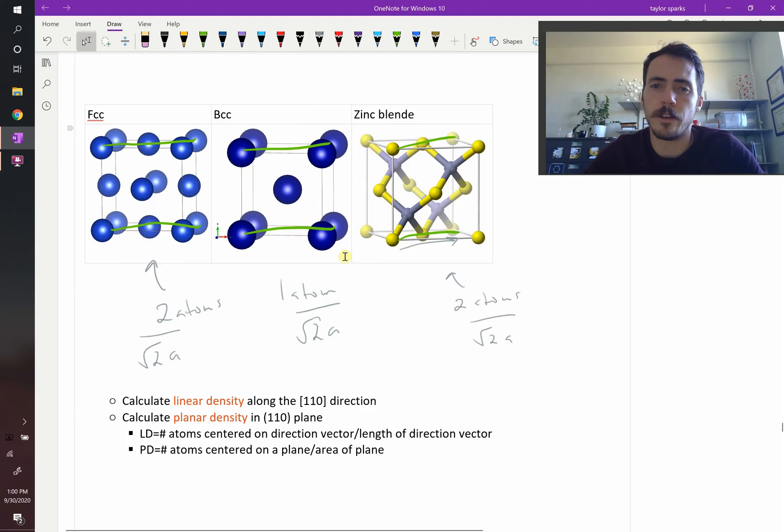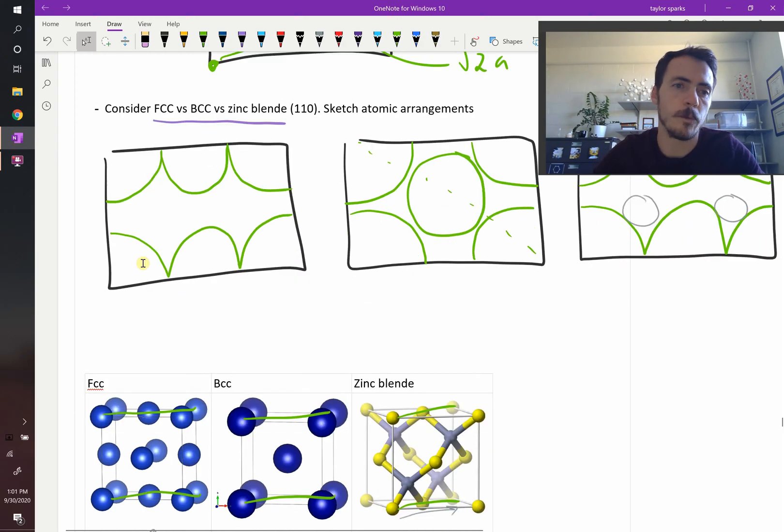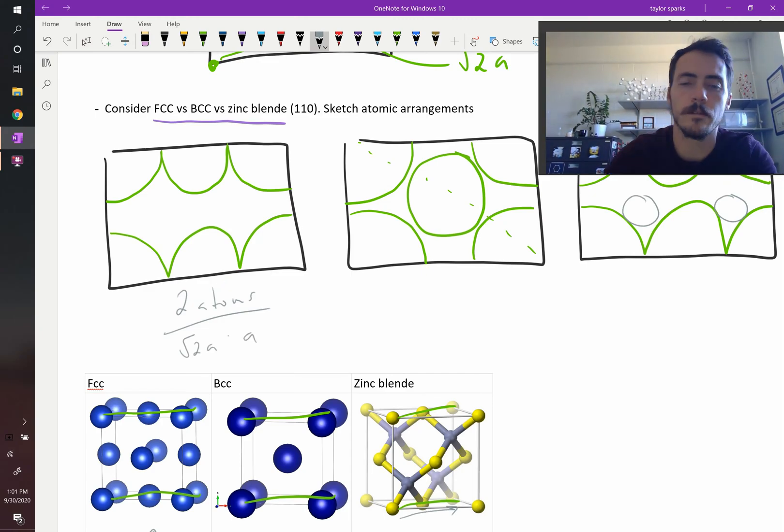What about the planar density? Here we're doing the number of atoms on the plane divided by the area of the plane. So how many atoms are we talking about in this one? Well, you've got a quarter, a quarter, a quarter, and a quarter, and then a half and a half. So you have two atoms, and it's divided by the area of the plane, which is going to be root two times a multiplied by a.